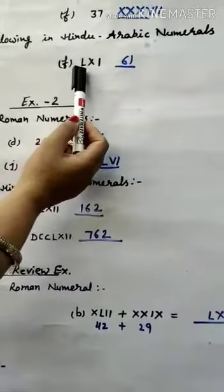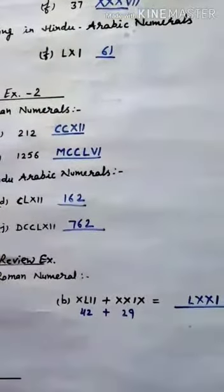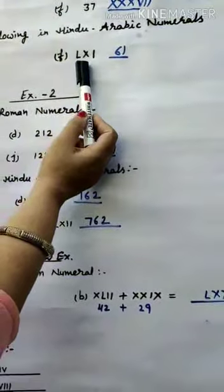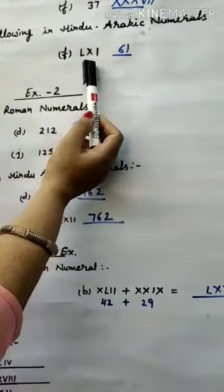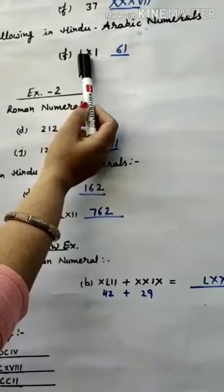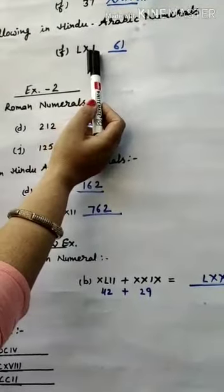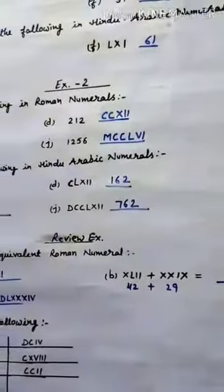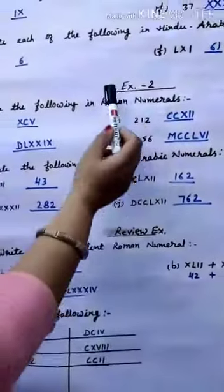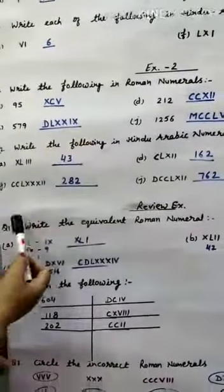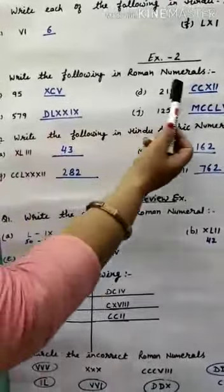Now look at this: L stands for 50, X is 10, and I is 1. 50 and 10 make 60, and adding 1 gives 61. Exercise 2 has the same type of questions but with slightly bigger numbers.